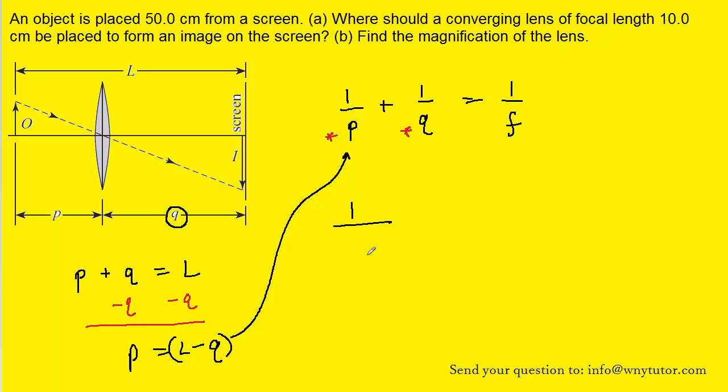And what we'll do is take that quantity for P and we will substitute it into this equation. So we're going to end up with 1 over L minus Q plus 1 over Q equals 1 over F. Now the nice thing about this equation is that it's no longer expressed in terms of two unknowns but rather only one unknown. We don't know Q but we do know L and we do know F. So this is a better equation. Our job is to solve this equation for Q.